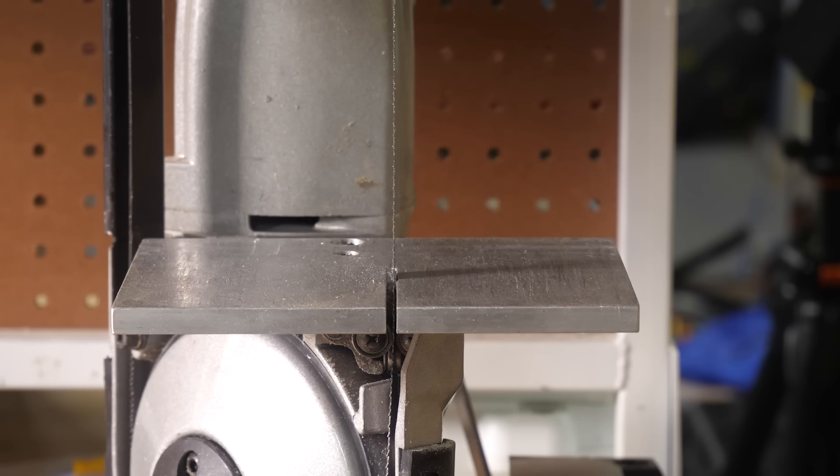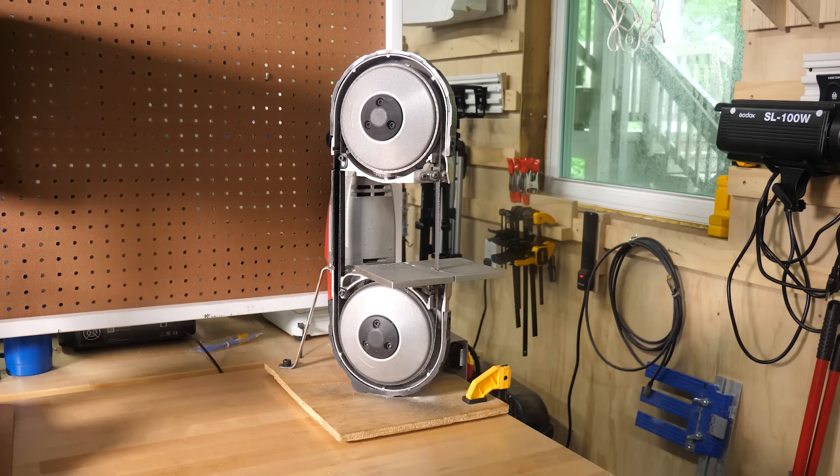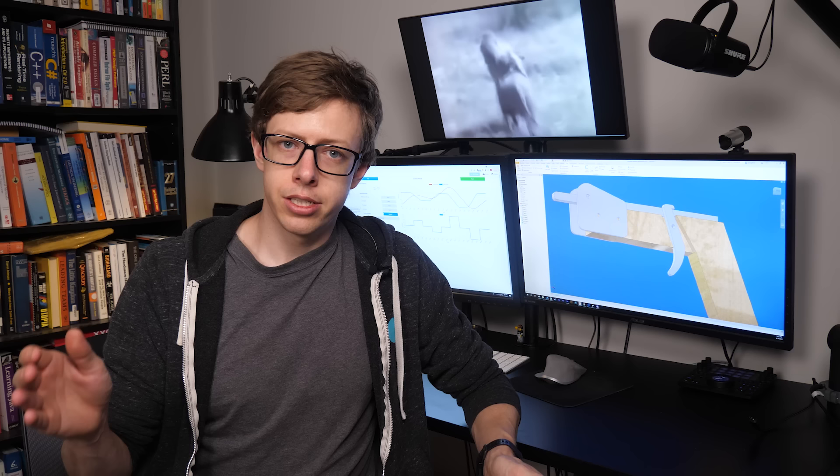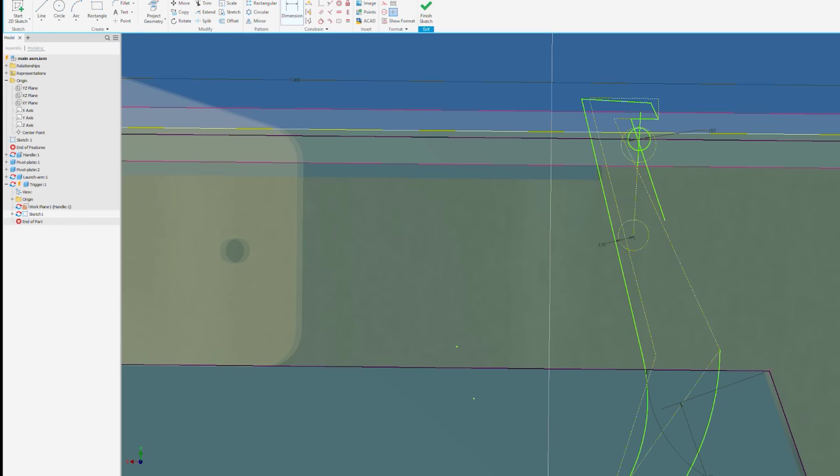We're going to start simple with some of the more basic tools. I'm limiting myself to the bandsaw, the drill press, and the belt sander. For all of these designs, I'm using a really important tool called computer-aided design, although most people just call it CAD. I'm using Autodesk Inventor to design everything in the computer before I build anything.